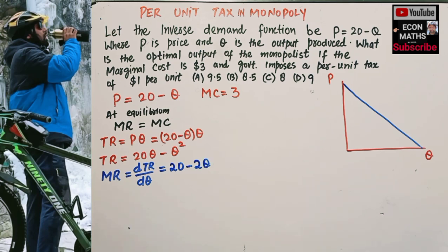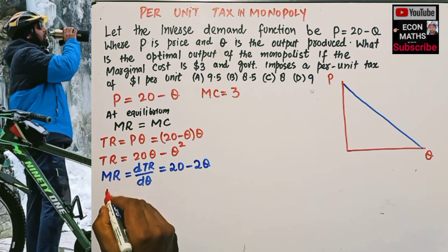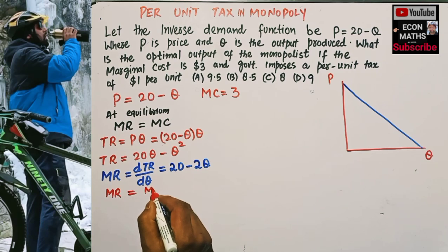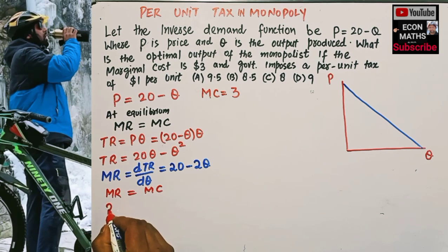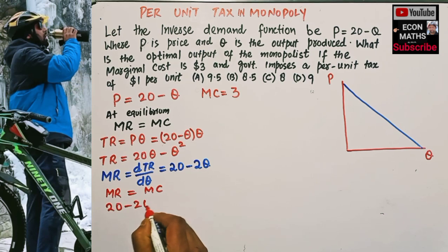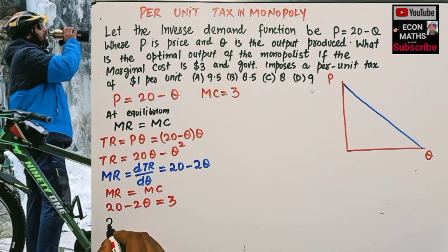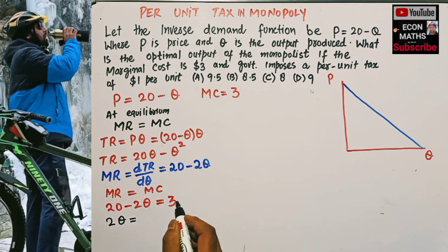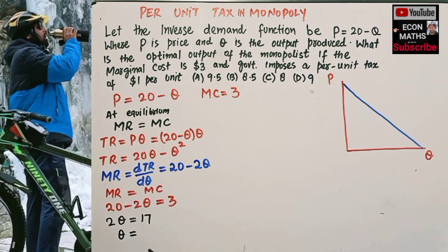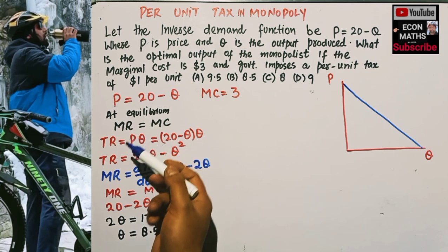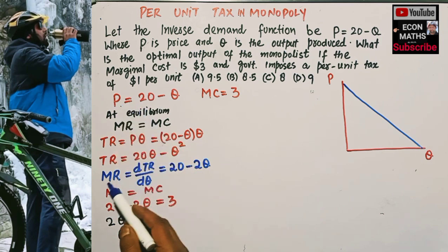We now equate marginal revenue with marginal cost before the imposition of tax. Marginal revenue equals marginal cost implies 20 minus 2q = 3. Solving for q: 2q = 20 minus 3 = 17, which gives us q = 17/2 = 8.5.